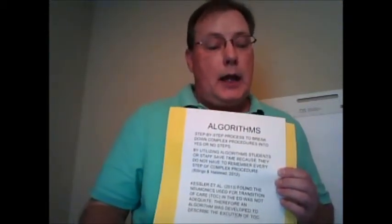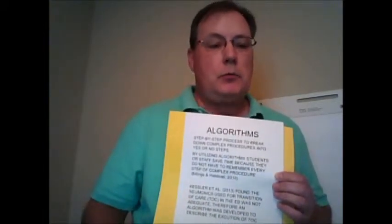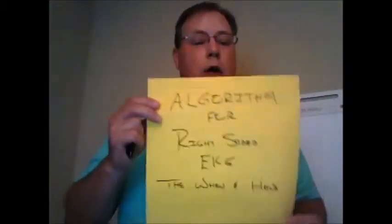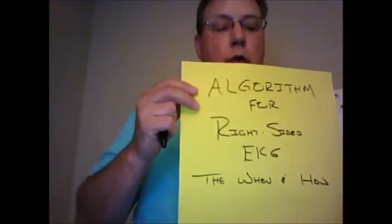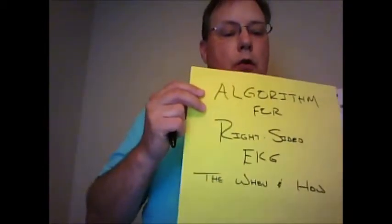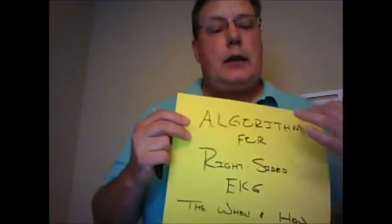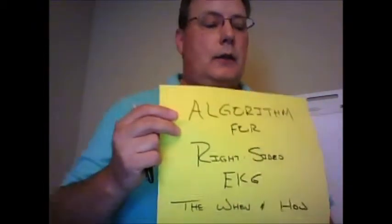So what we're going to talk about today are right-sided EKGs. That's not something that we do very often in the emergency room, but it's very important. And so we're going to talk about algorithms for right-sided EKGs. So really, what we want to talk about is the when and how to do a right-sided EKG. So first we're going to talk about the when and develop an algorithm here, a step-by-step process. And then we'll quickly talk about the how.